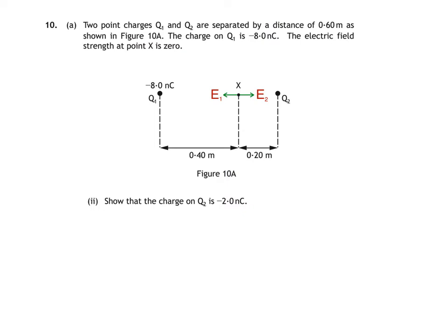Remember that to find the direction of the electric field due to a charge, we imagine placing a positive test charge at that point. A positive test charge placed at X would experience a force to the left towards charge 1, which is why E1 is to the left. It would also experience a force to the right towards charge 2, which is why E2 is to the right.